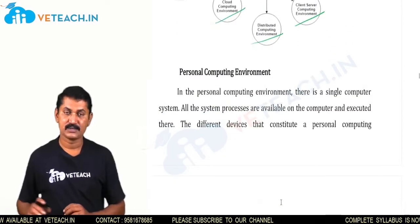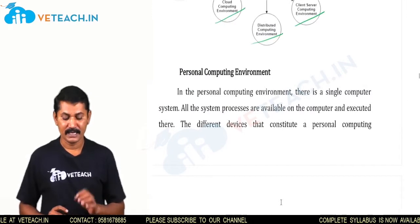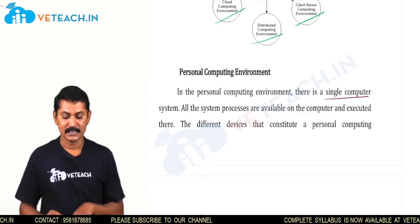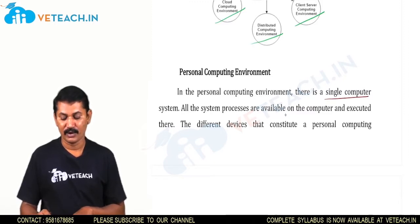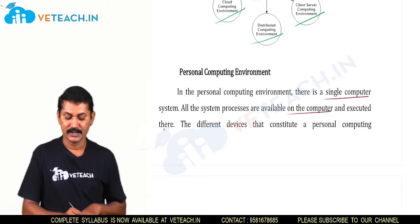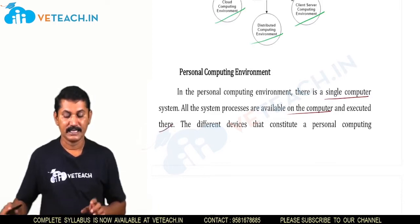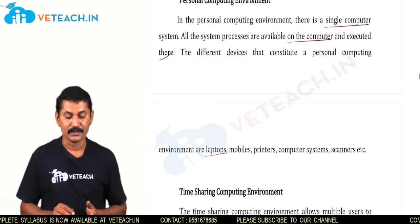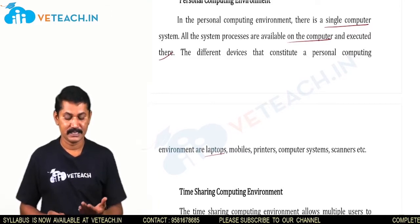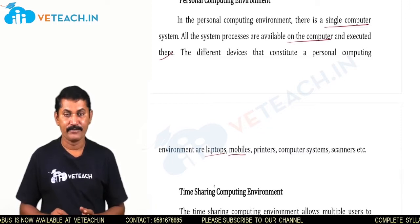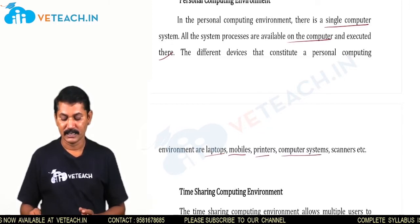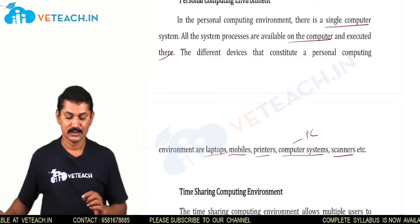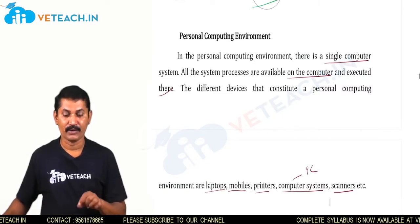The first one is the personal computing environment. In a personal computing environment, there is a single computer, and system processes are available and executed on that computer itself. Different devices constitute personal computing — like a laptop used for personal purposes by a single user, a mobile phone, printer, general computer system like a PC, and scanners. These all come under the personal computing environment.